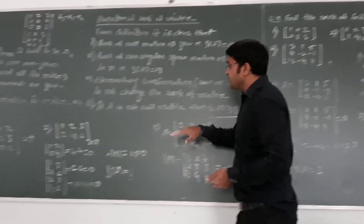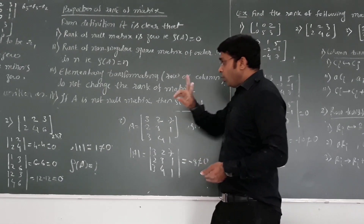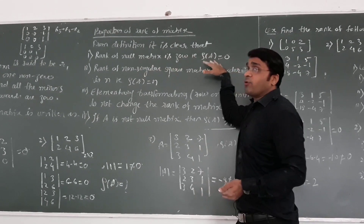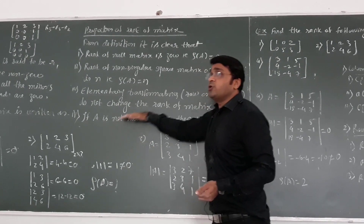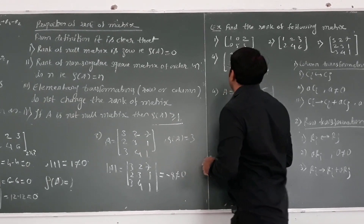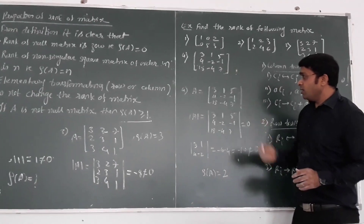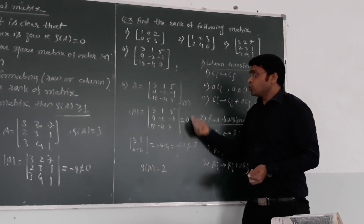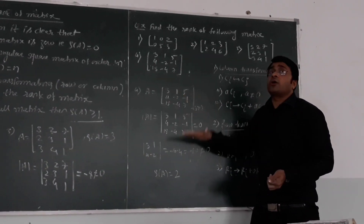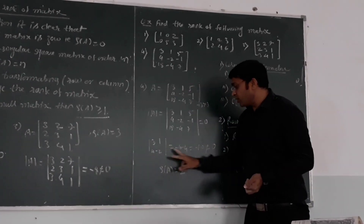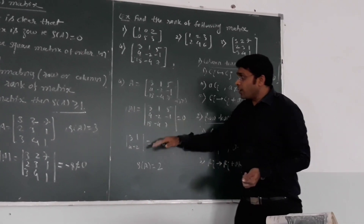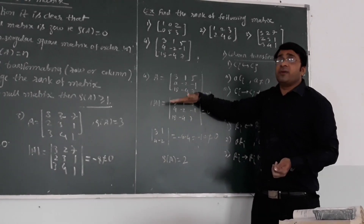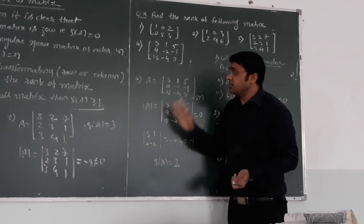One more thing: if A is not a null matrix, then rank will be greater than or equal to 1. For this matrix, the highest minor (3 by 3) has value 0, so we go to the lower order minor, that is 2 by 2. The first 2 by 2 minor comes out to be minus 10, which is non-zero. Hence, the rank of this matrix is 2, because there exists a minor of order 2 which is non-zero, and all higher order minors of order 3 by 3 and 4 by 4 are 0.